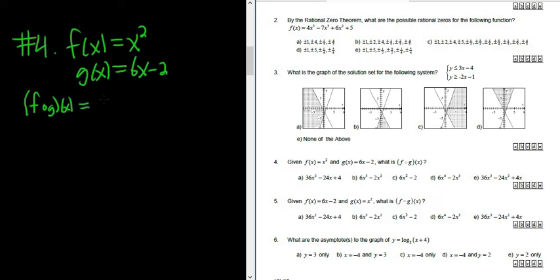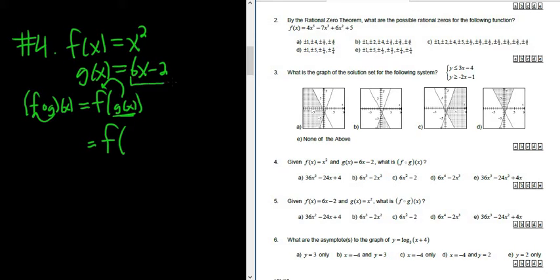First, f∘g of x is the same thing as f of g of x. So you put g into f. This is f of — and now you just replace g with what it is. So g is 6x minus 2, so you just replace it with 6x minus 2.